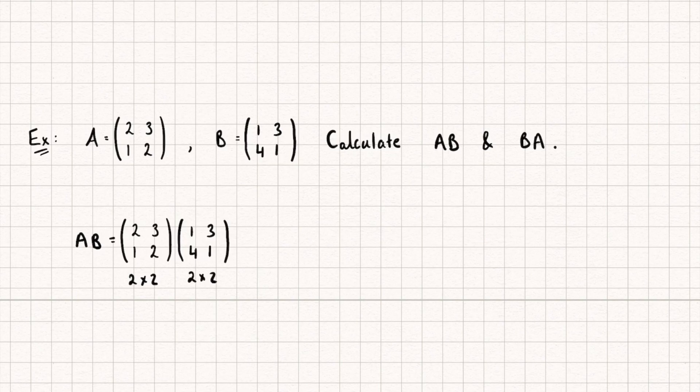Let's check if this is valid. Our left matrix has two columns, and our right matrix has two rows. So if the inside numbers of our dimensions are the same, then yes, matrix multiplication can occur. The two numbers on the outside — 2 by 2 — give us the dimensions of our resulting matrix. So if I multiply these two matrices together the output is going to be another 2 by 2 matrix.